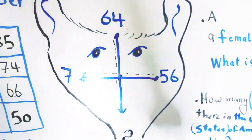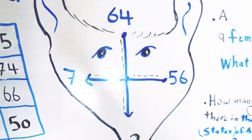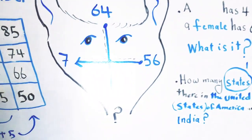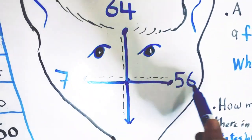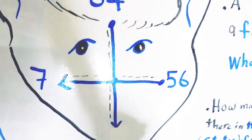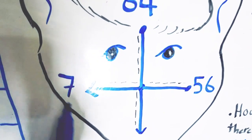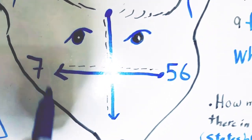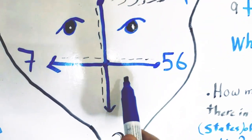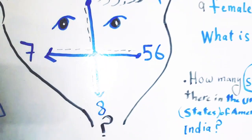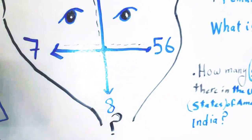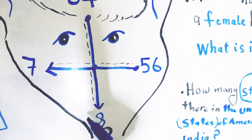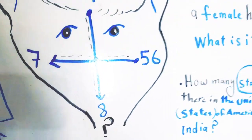We use the complete arrow to find the rule. If we divide 56 by 8 we get 7, so the missing digit here is 8. Checking: when we divide 64 by 8 we get 8. So we use the complete arrow in order to reach the missing digit.